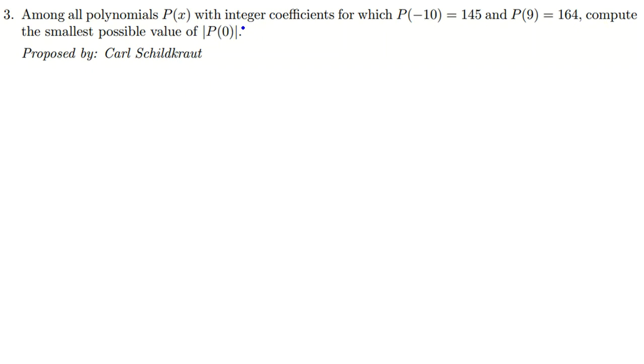So when you see integer coefficients, the most useful idea from qualifying level up to IMO is that a minus b divides P(a) minus P(b). This idea is so much useful in American math competitions, in BMO, British and IMO. So here I want to use this idea.